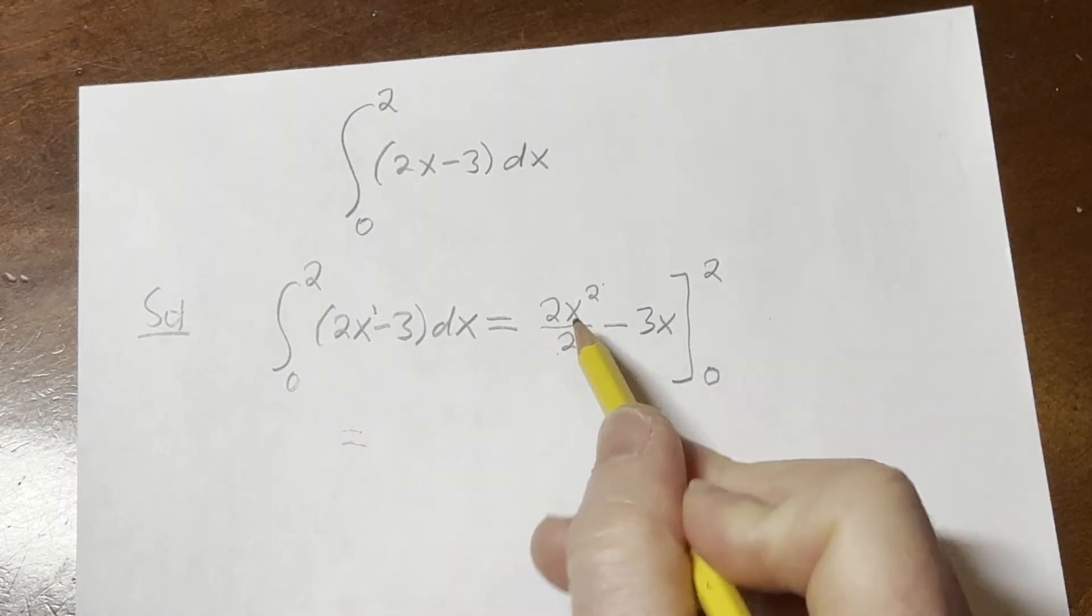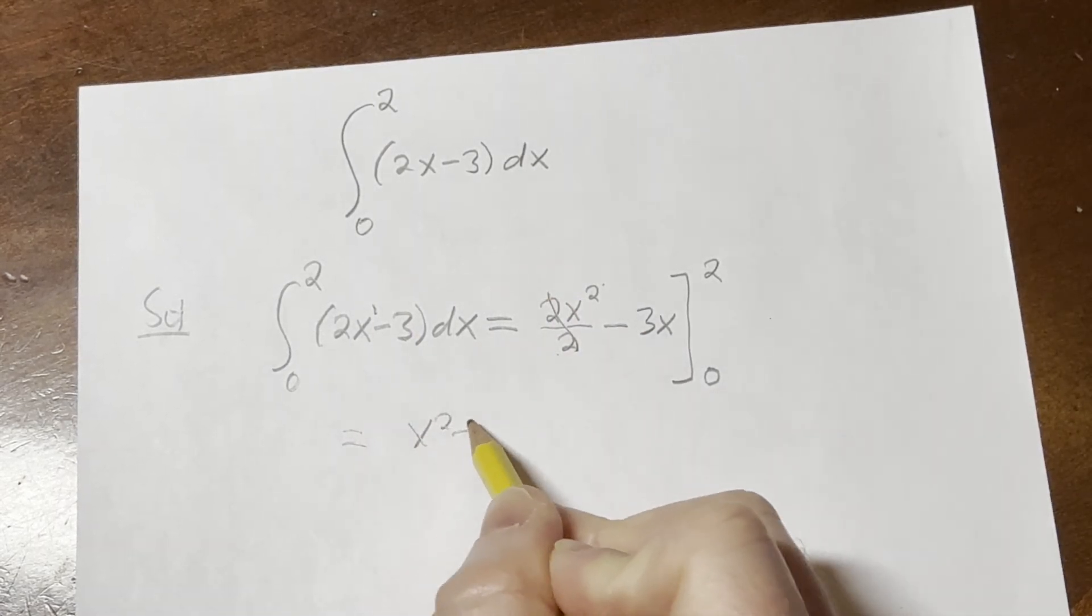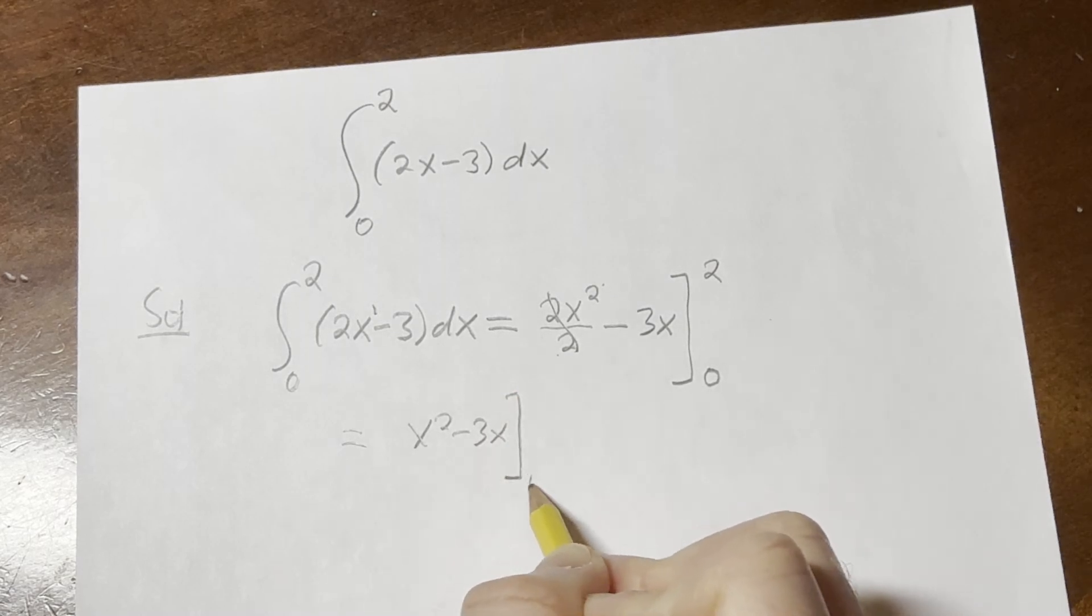Continuing, this is equal to, we'll clean this up, x squared minus 3x, bracket, 0 and 2.